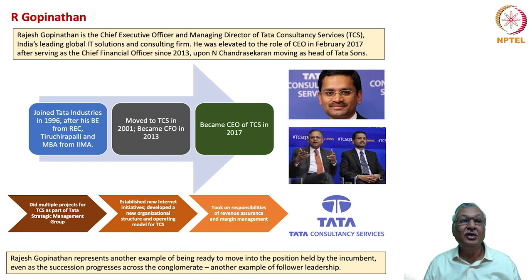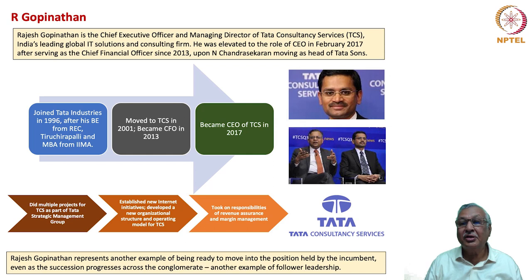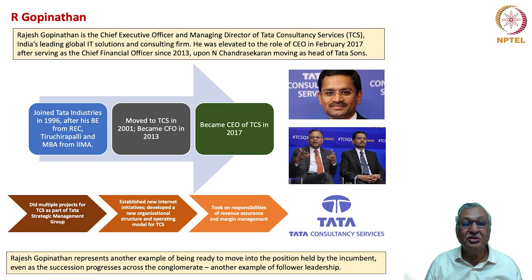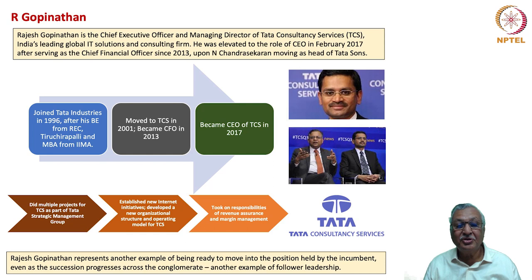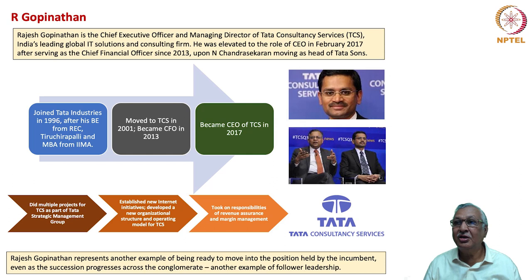Rajesh Gopinathan is the CEO and Managing Director of Tata Consultancy Services. He moved into the CEO position after Chandrasekharan moved to head Tata Sons. Gopinathan was the Chief Financial Officer from 2013 until his elevation as CEO in 2017. He joined Tata Industries in 1996 after his B.E. from Regional Engineering College Trichy and MBA from IIM Ahmedabad, moved to TCS in 2001, became the CFO in 2013, and became CEO in 2017. He did multiple projects for TCS as part of Tata Strategic Management Group, established new internet initiatives, developed a new organizational structure and operating model for TCS, and took on responsibilities of revenue assurance and margin management. Rajesh Gopinathan represents another example of being ready to move into the position held by the incumbent as succession progresses across the conglomerate.